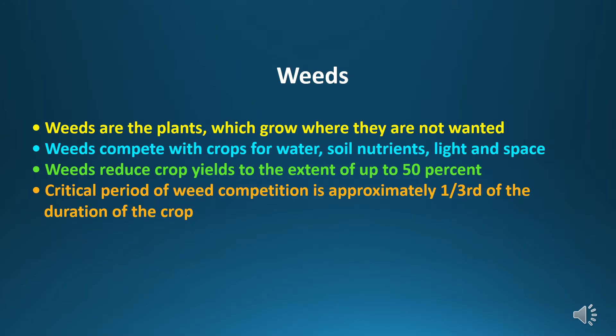First we have to understand what are weeds. Weeds are plants which grow where they are not wanted — these are undesired plants that grow and make competition with crop plants for water, nutrients, moisture, light, space, etc. Weeds play an important role in reducing crop yields to the extent of 50%, and the critical period of weed competition falls approximately 1/3rd of the duration of the crop.